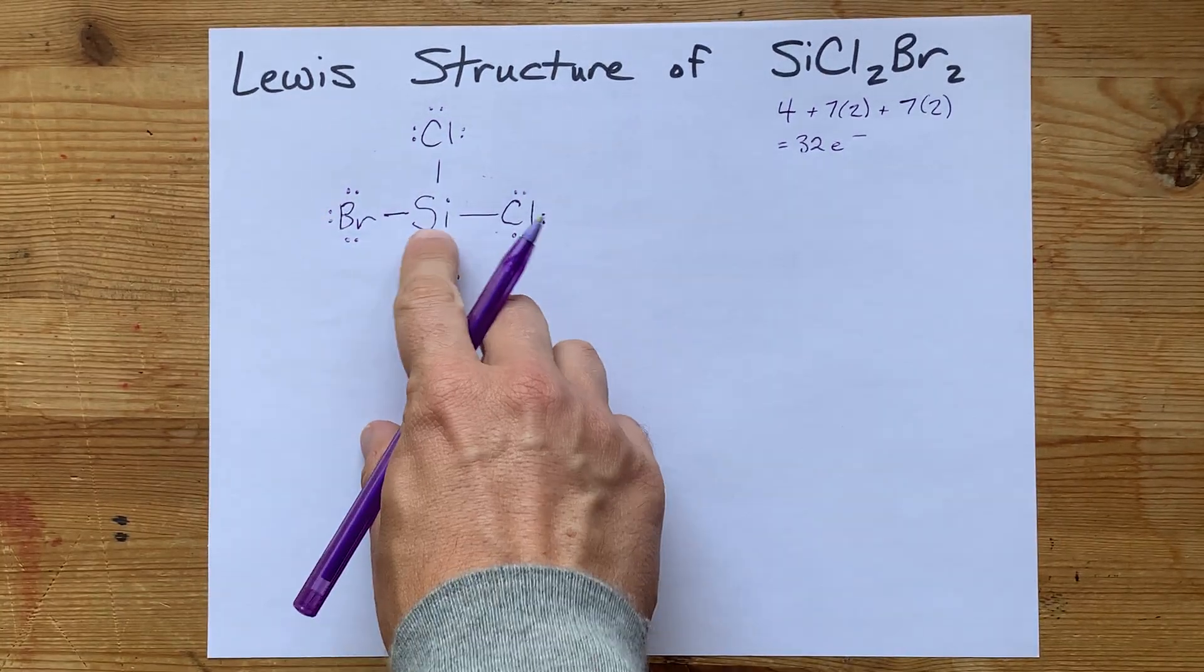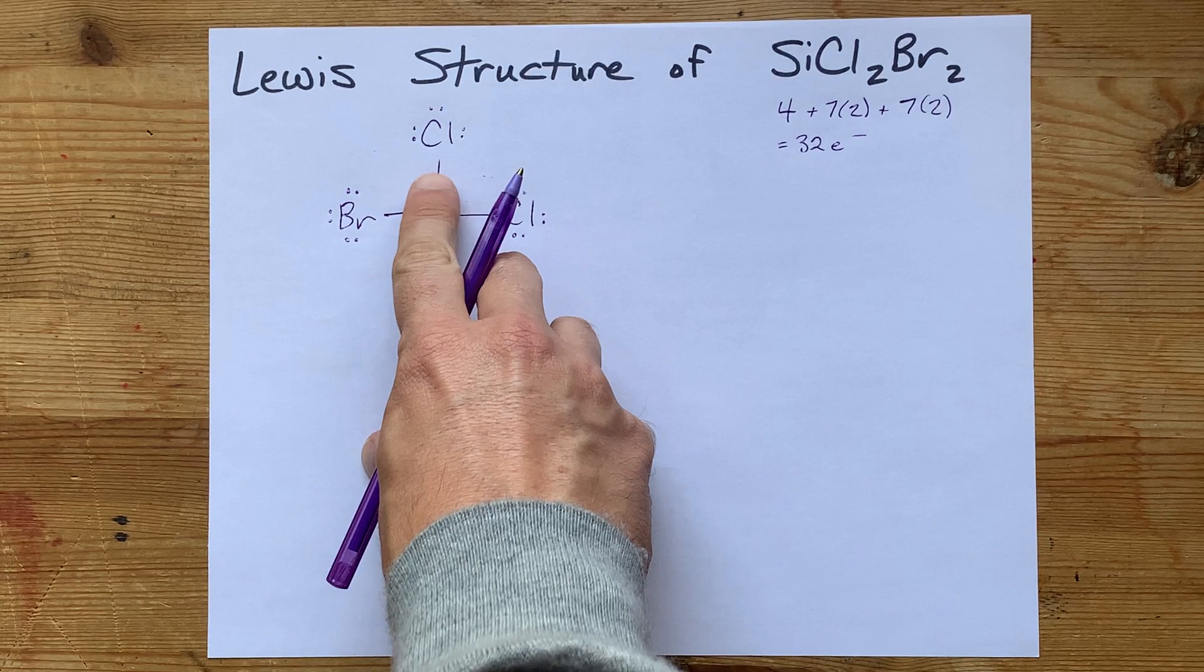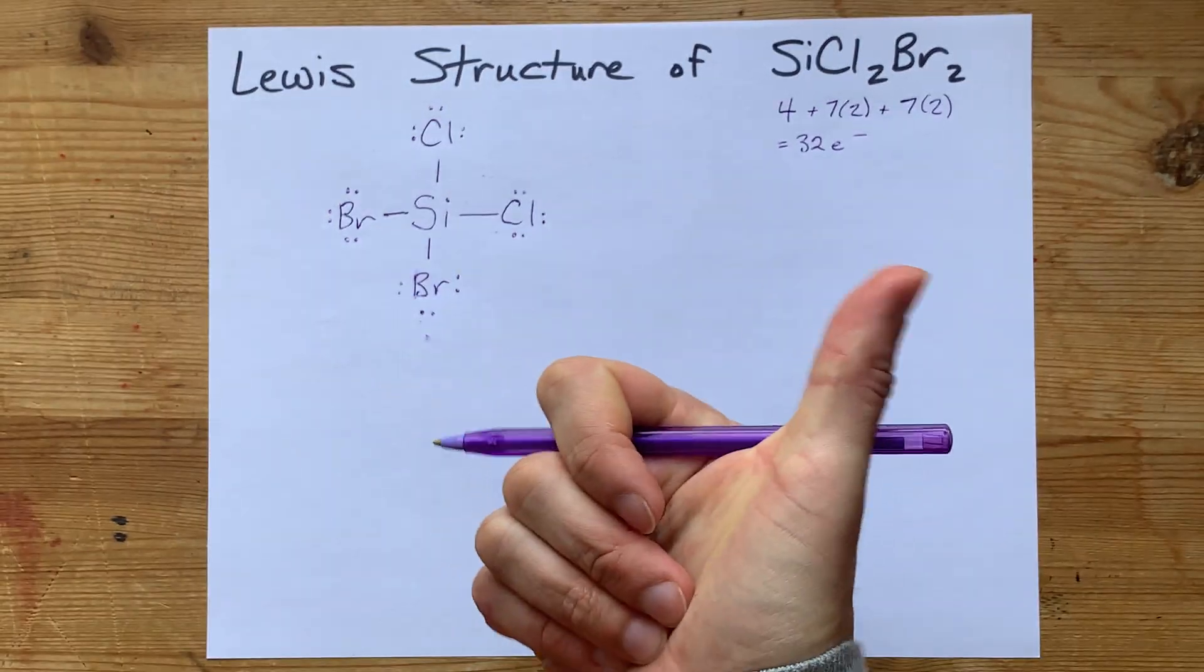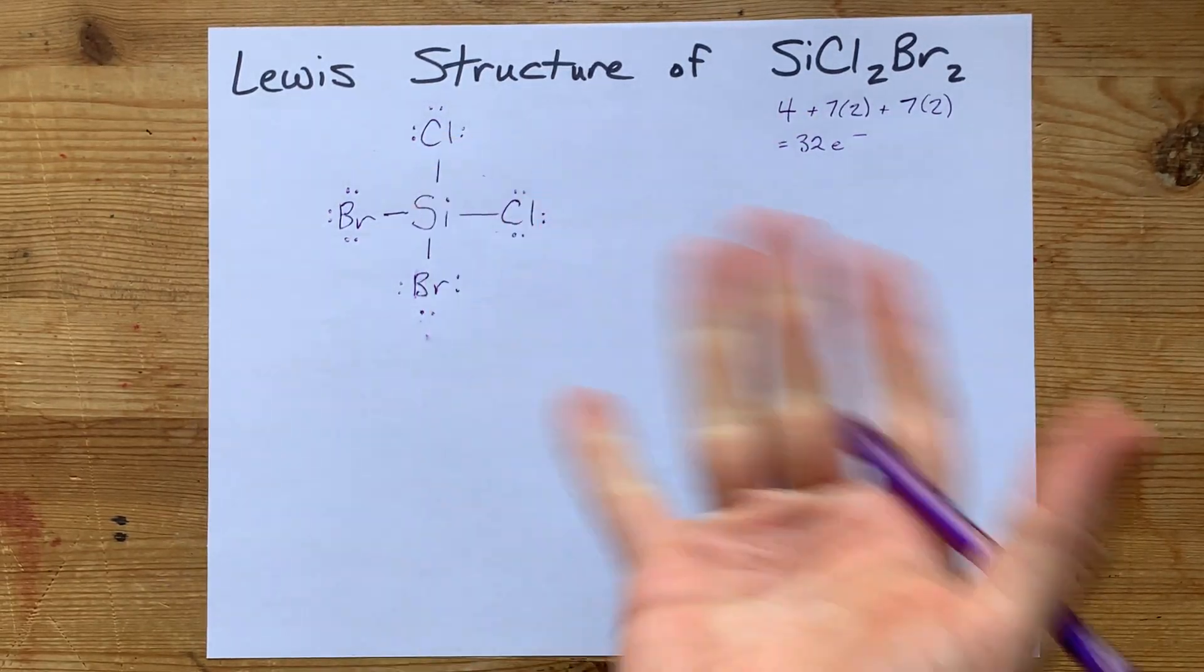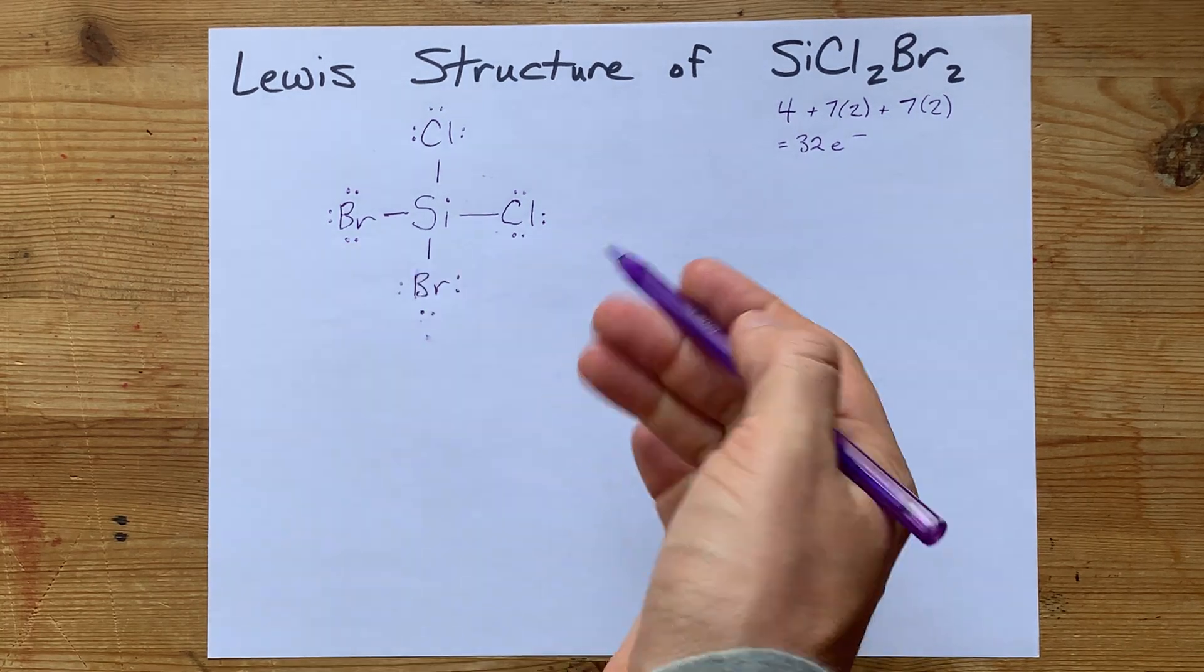And now let's just check the center atom. The silicon has 2, 4, 6, 8 electrons around it. That's great. 32 electrons, and everything satisfies the octet rule. This is it.